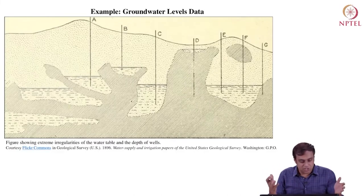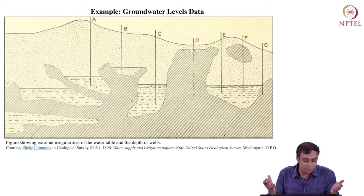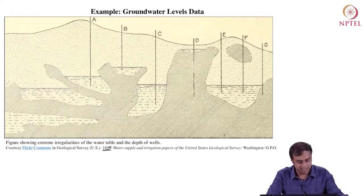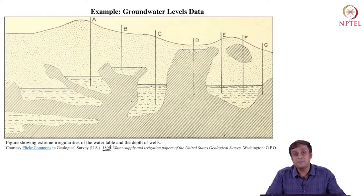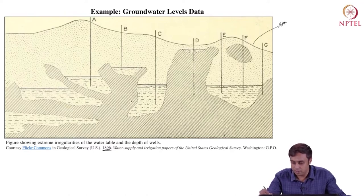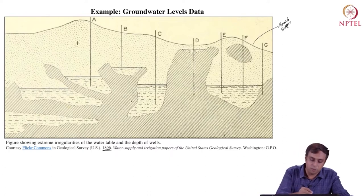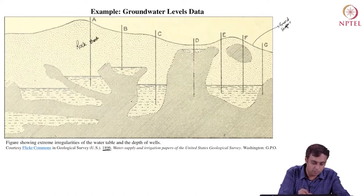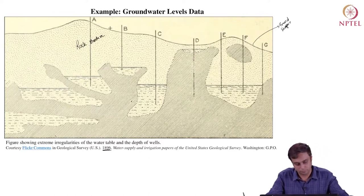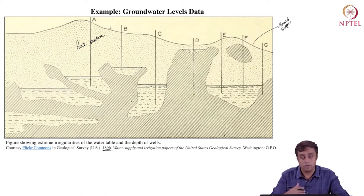Here is a schematic, a picture that has been sourced from the US Geological Survey and it is a very old picture — it goes back to 1896. This picture is very informative. What's happening here is that we have the ground surface, which is quite irregular. And beneath the ground surface, you have this rock or sand structure — the dotted area.